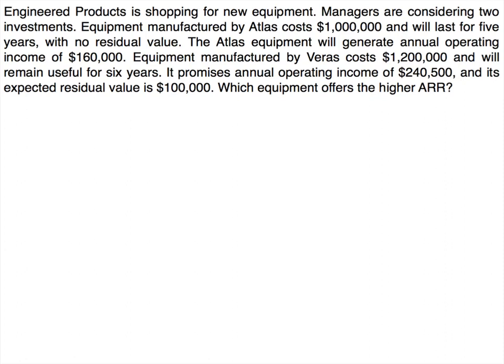Here's the first example. Engineered Products is shopping for new equipment and managers are considering two investments. Equipment by Atlas costs $1 million, lasts five years, has no residual value, and generates annual operating income of $160,000. Equipment by Veras costs $1.2 million, lasts six years, has annual operating income of $240,500, and an expected residual value of $100,000. Which equipment offers the highest ARR? Pause and try to calculate it before continuing.